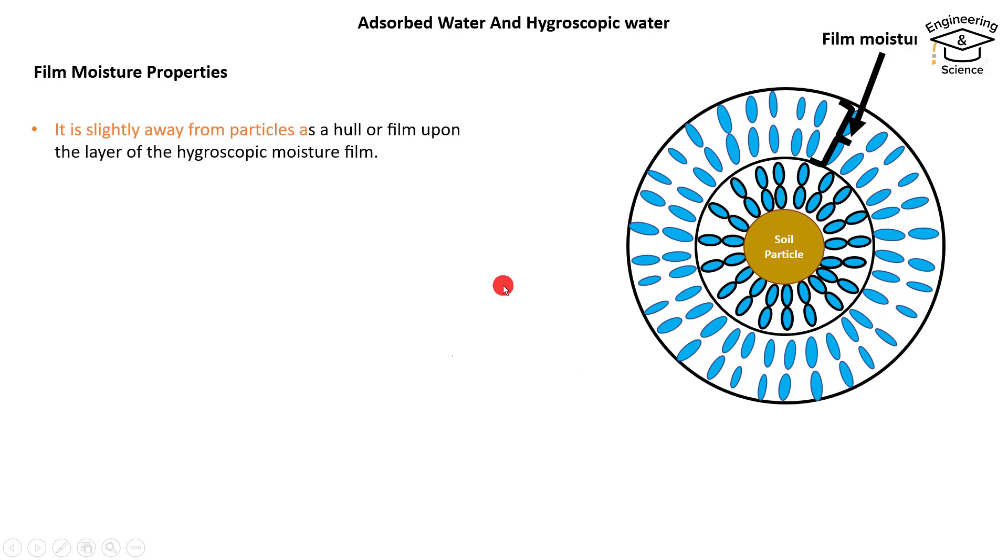It is slightly away from the particle as a film upon the layer of the hygroscopic moisture film. It is composed of the main part of the water film. Its density is the same as free water but with large viscosity.